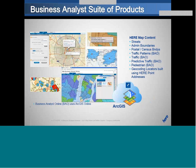One of the other products using HERE map content is the Business Analyst suite. We do not provide the demographic or business data, but we provide the geography on top of which ESRI provides business and demographic data. This may come in handy if you want to identify demographic or business profiles around an address or series of locations in your community. There are both desktop and server versions of Business Analyst, and Business Analyst Online also uses HERE map content available through ArcGIS Online.